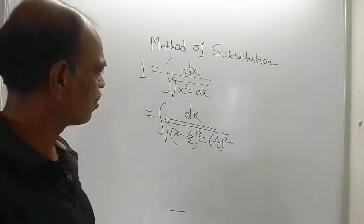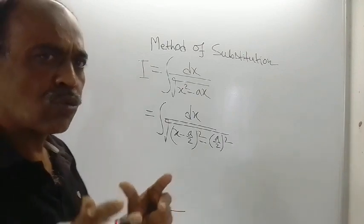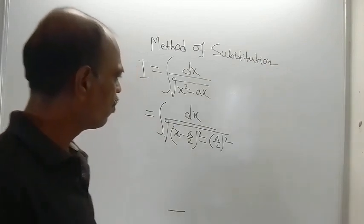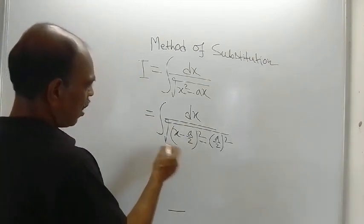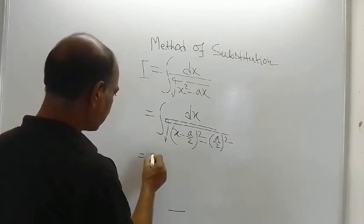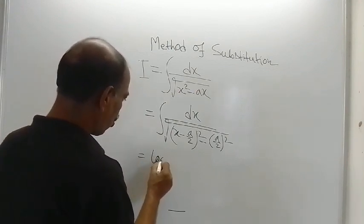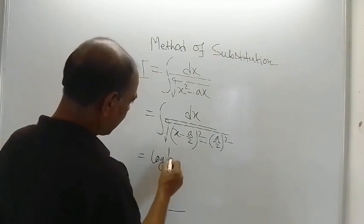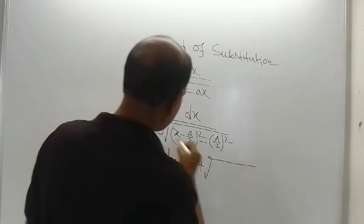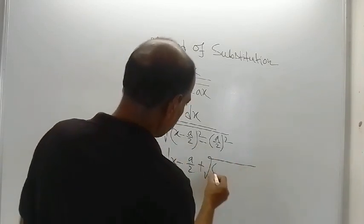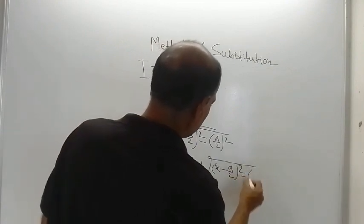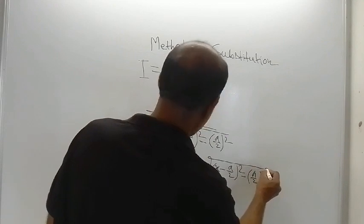Now, this is equal to this. So the extra term a by 2 whole square has been adjusted by writing this way with a negative sign. Now you know the formula. It is equal to log of x minus a by 2 plus this quantity: x minus a by 2 whole square minus a by 2 whole square.